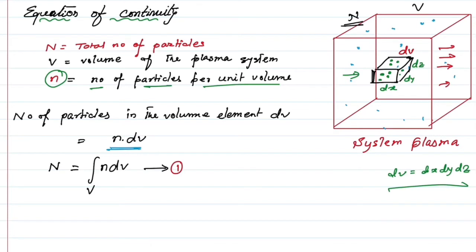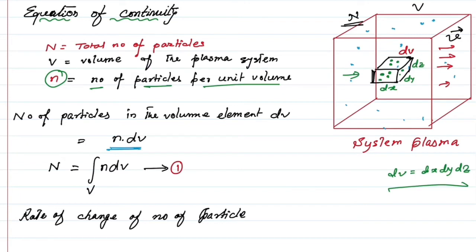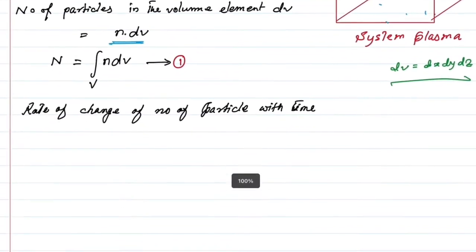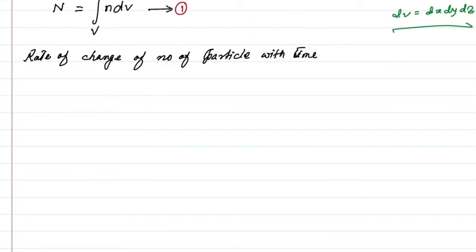Now let us assume that some particles are going out of this system with average velocity u. Then the rate of change of number of particles with time — let me scroll up the page — is given by del N del t equals minus the volume integral of del n del t times dv.